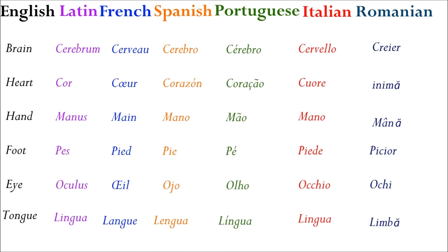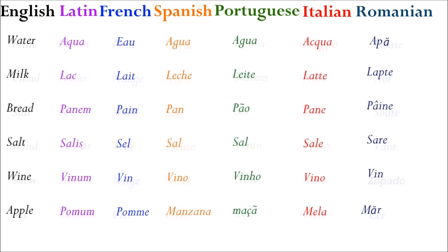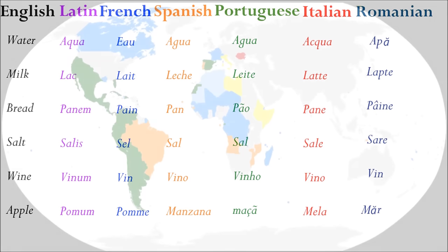Body parts: Brain — Cerebra. Heart — Cor. Hand — Manus. Foot — Pede. Eye — Oculus. Weather: Rain — Pluvia. Cloud — Nubes. Sun. Wind — Ventus. Snow — Nix. Foods: Water — Aqua. Milk — Lac. Bread — Panis. Salt — Salis. Wine — Vinum. We can really do this all day.